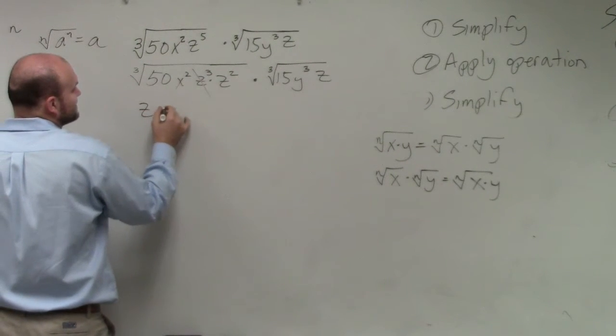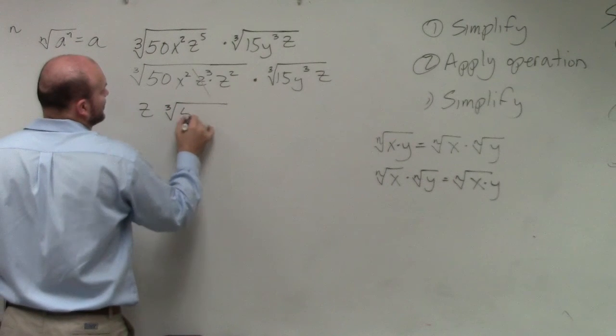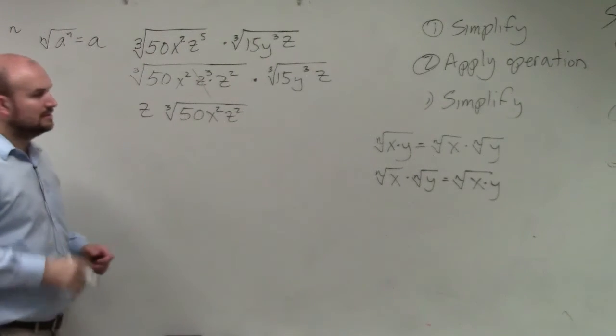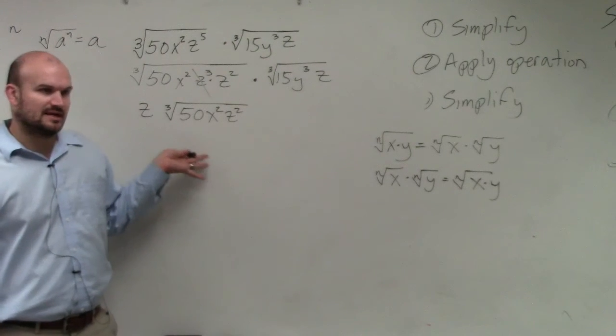So I have z times the cube root of 50, x squared, z squared. Does everybody see how that's left over? Does that kind of make some sense? Yes.